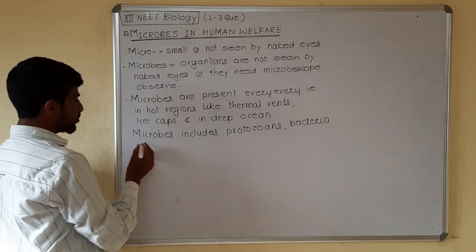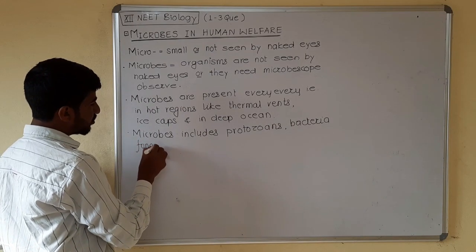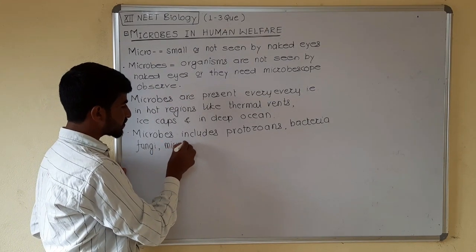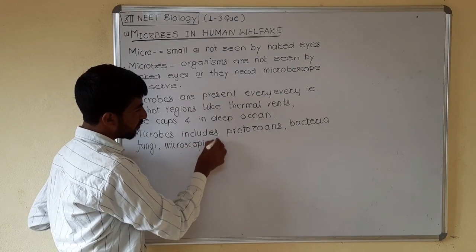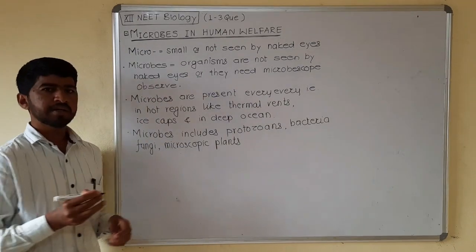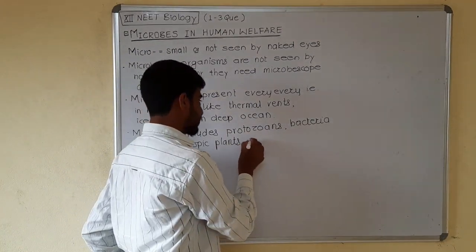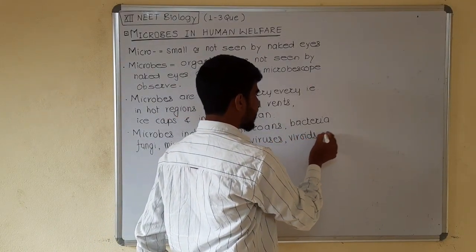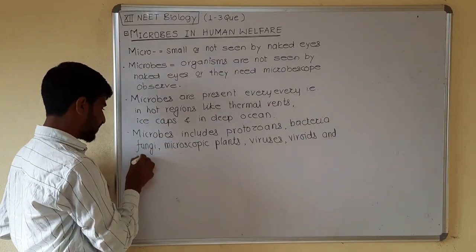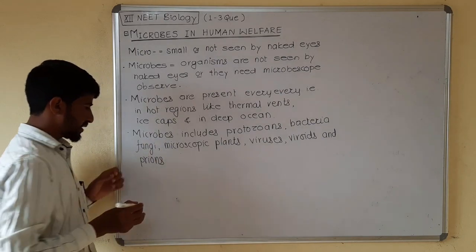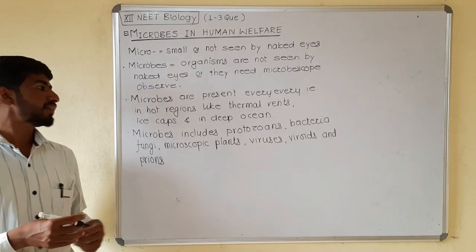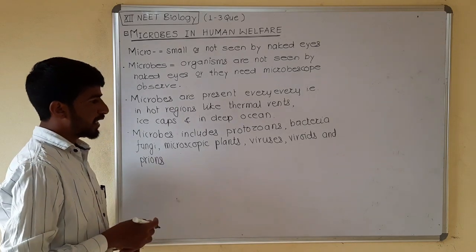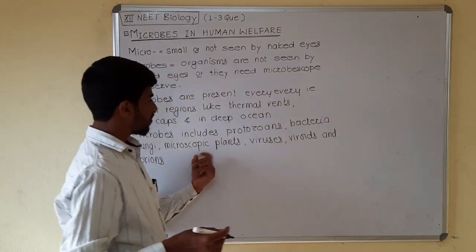Next, fungi — fungi mainly include unicellular fungi just like yeast. Then there are some microscopic plants. Viruses are also included, and viroids as well. These are all included in the microbes category, which includes protozoans, bacteria, fungi, and microscopic plants like Chlorella and Chlamydomonas — unicellular plants like that.